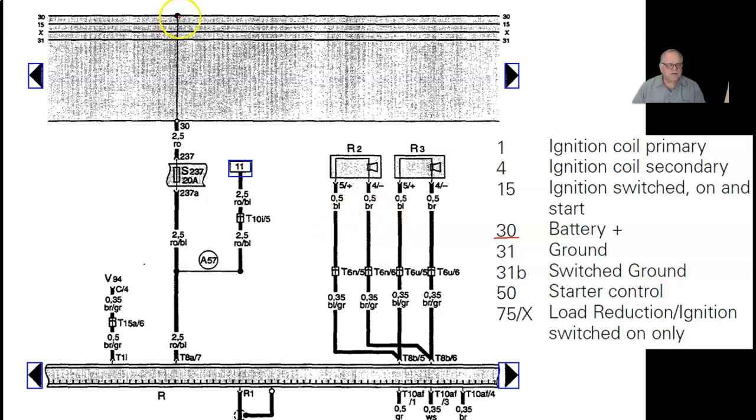Start at pin 30 here. We have a splice. Coming down it becomes 2.5 RO and then the 237, which is S237, so far I wouldn't know what that is, but then it has a 20A. Okay, I've got a 20 amp fuse. I can recognize the symbol for a fuse.